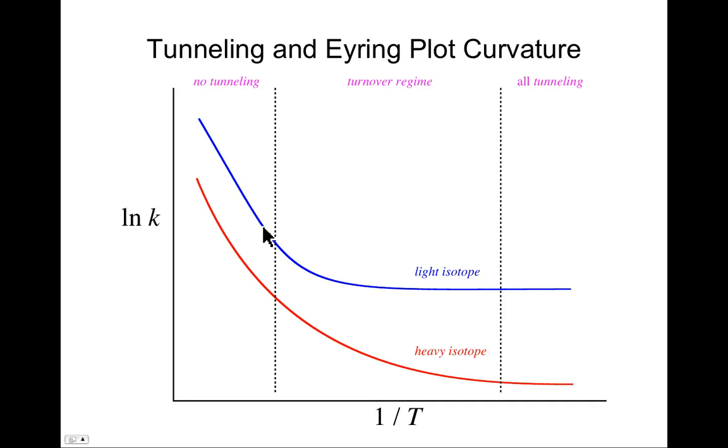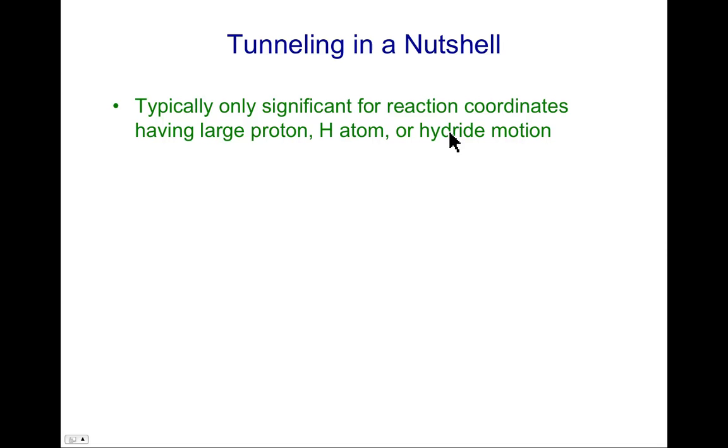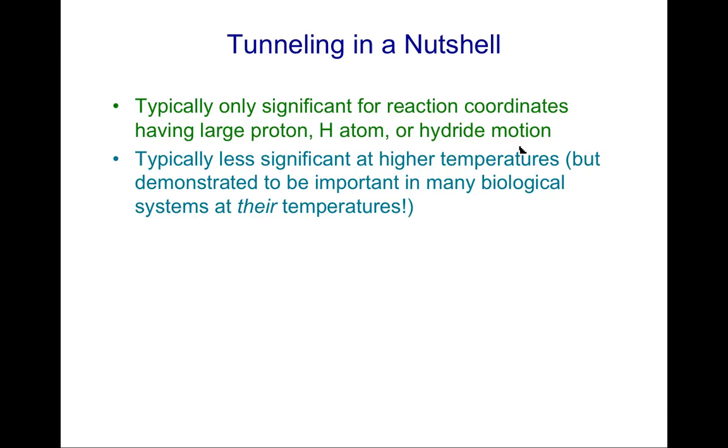And so this can be quite complicating when you're trying to interpret kinetic data, because unless you are measuring over a large enough range to see this kind of curvature, you may be fitting this to an Eyring or an Arrhenius expression, where you really shouldn't because the tunneling is influencing where the points are. Tunneling in a nutshell, typically only significant for reaction coordinates that have large proton, H atom, or hydride motion, and that's because of the dependence of tunneling efficiency on mass. If you get much more massive than a hydrogen atom, you just have very slow tunneling rates. It's not unheard of to see heavy atom tunneling, but certainly it's quite rare. It's also less significant at higher temperatures, but nevertheless it's well established that biological systems at biological temperatures can have a significant component of the rate being through tunneling.